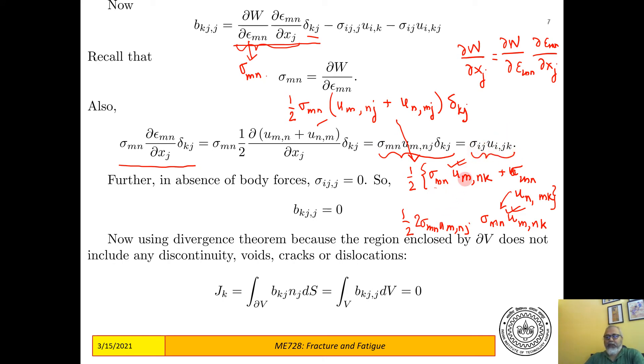So where I have replaced m by i, n by j, and j by k. So this is what you get from this first term, which is actually the same as the last. So they cancel out. And in absence of body forces, this is equal to zero from equilibrium. So this cancels out as well.